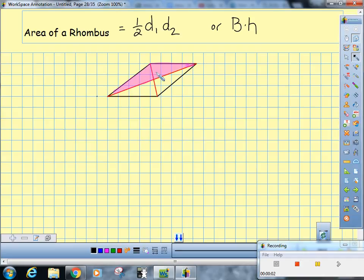You could also technically just find the area of one of these triangles and multiply it by four. There are lots of different ways you can do it.